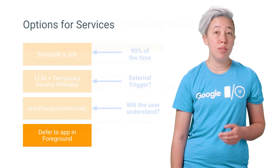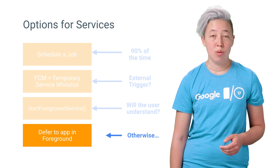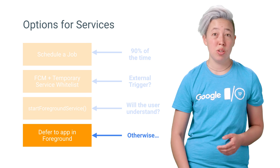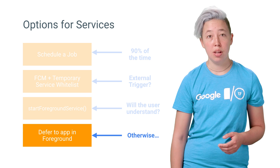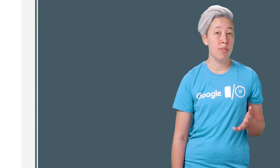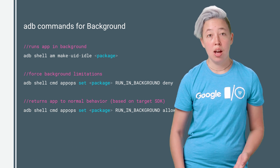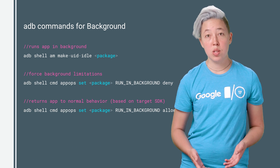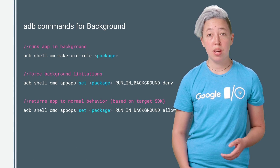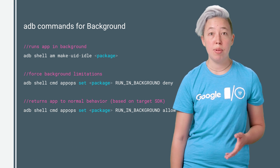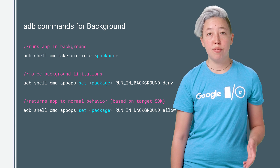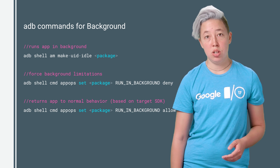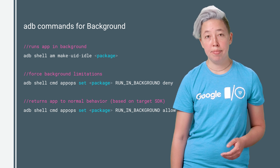If none of those options work for you, you might consider deferring your work until your app is in the foreground. If you need to test your app under the new restrictions, I've also included links below with the ADB commands to make the app run in the background and to force background limitations for your app.